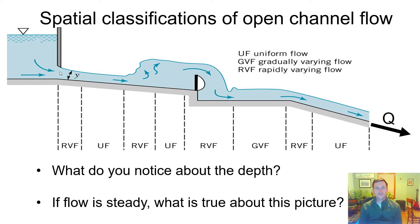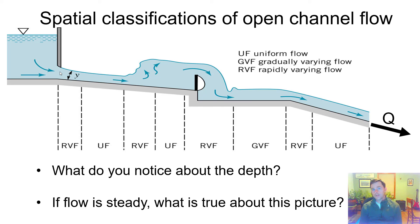This figure from the Munson textbook reminds us that all of these different spatial flow classifications can actually happen in a single river or system. It shows all the different locations where you might have rapidly varied flow, uniform flow, or gradually varied flow. For a steady flow — which is most of what we look at as engineers — this picture would not be changing in time. How does the river do that? How does depth go up and down but the flow rate remain constant? The velocity speeds up and slows down in accordance with Q equals VA, so flow depth and velocity adjust, but the flow rate stays constant through the whole system, both spatially and in time.